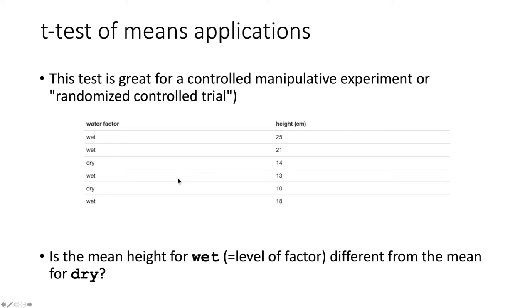In a lot of contexts, this type of experiment is called a randomized controlled trial or RCT. The question in this particular example would be whether the mean height for the wet level is different from the mean height for the dry level.